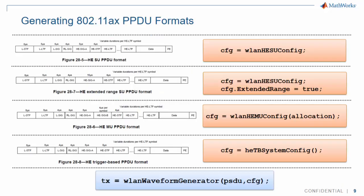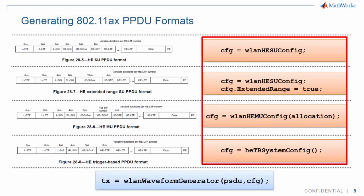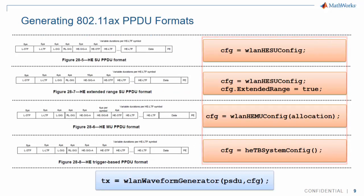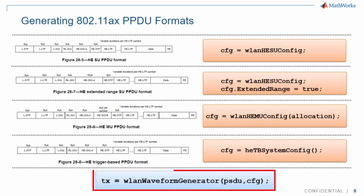Let's have a look at how to generate 802.11ax waveforms using Wireless LAN Toolbox. You first generate a base configuration for the case you are interested in, then call the Wireless LAN waveform generator to generate the waveform for a given payload.